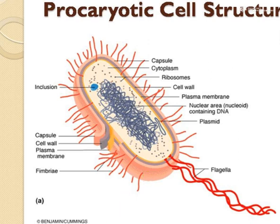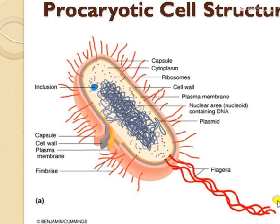The capsule is present outside the cell wall — it is the outermost layer of the bacterial cell. Then there is the flagella, a hair-like structure which is also present outside the cell wall. Fimbriae are hair-like appendages also present outside the cell wall, as are pili.